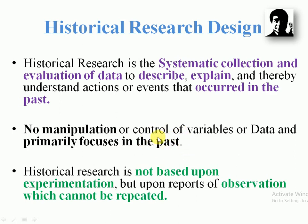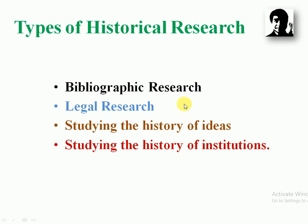Descriptive research means present-oriented, historical research means past-oriented, and experimental research means future-oriented. Historical research is not based upon experimentation, but on reports of observations which cannot be repeated. The types of historical research include bibliographic research, legal research, studying the history of ideas research, and studying the history of institution research.